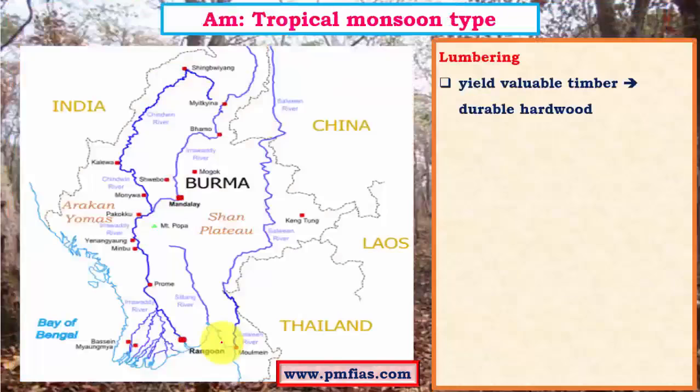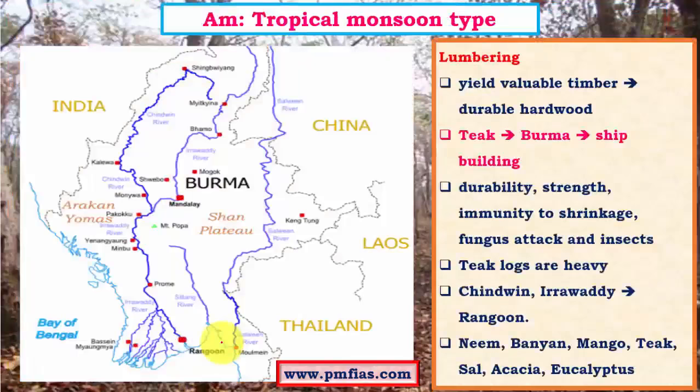Lumbering is a very important industry in tropical monsoon climate. In tropical rainforests, lumbering is discouraged due to various conditions. In savannah, tree density is not sufficient for profitable lumbering. But in tropical monsoon climate, tree density is adequate and trees occur in comparatively pure stands, unlike in rainforests where trees are widely scattered. There are fewer species and trees more or less occur in pure stands, making it commercially viable. The teak forests of Burma are exploited extensively in pure stands with no other species, making commercial exploitation very economical and profitable.